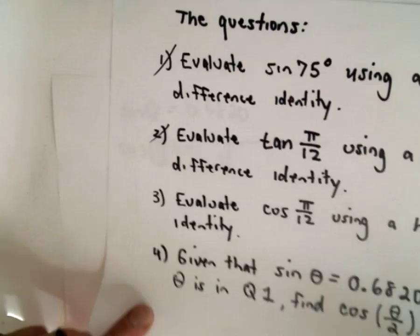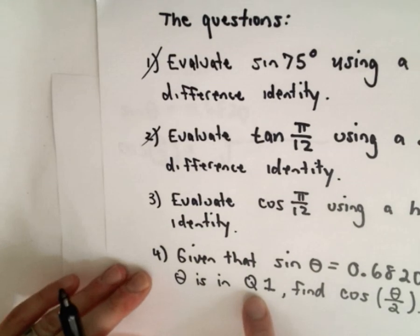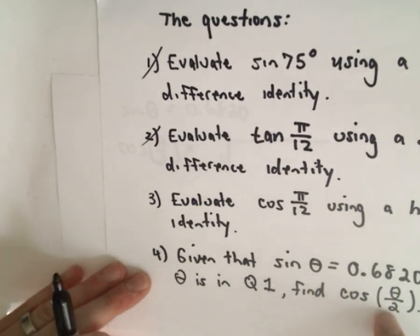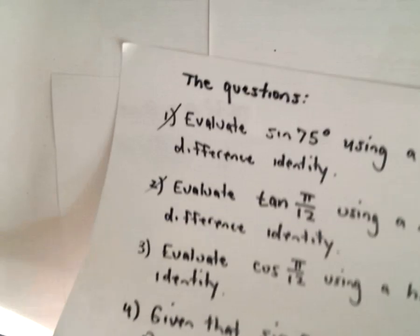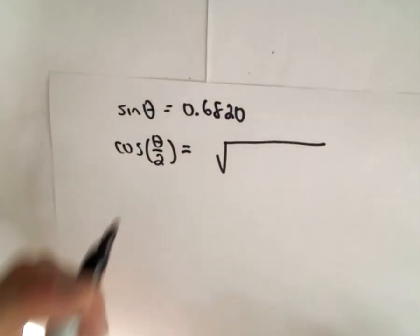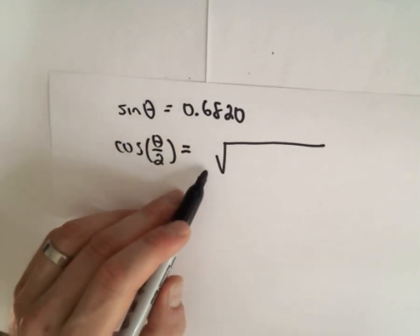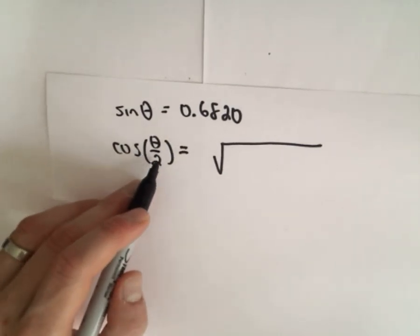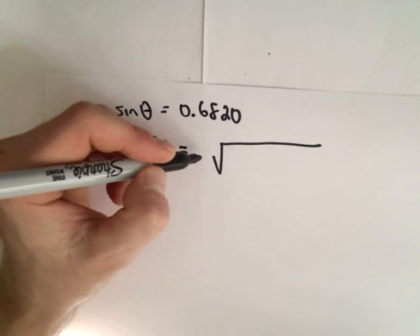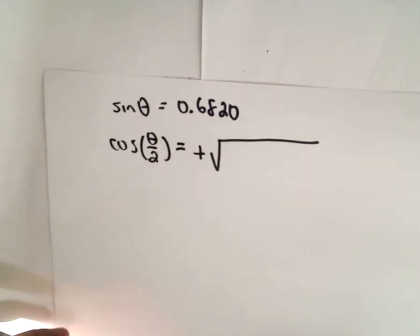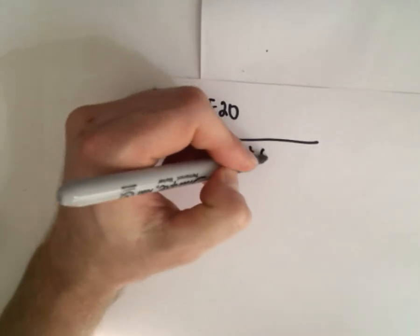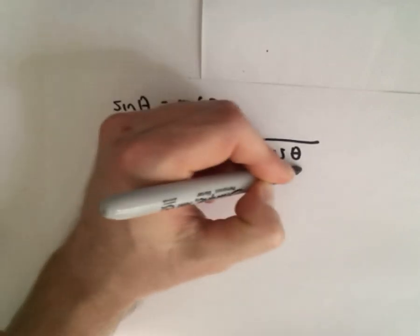So notice that if theta is in quadrant one, theta over two would also be in quadrant one. So just a second ago we were saying, you know, there's a positive and negative in general on this identity. But since our angle theta over two will still be in quadrant one, we're going to keep the positive radical. So we've got one plus cosine of theta over two.